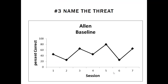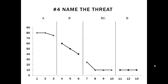Try graph three — name the threat. What's going on with Allen's baseline data here? We see a high amount of variability. This is data instability. What would we do to control for this threat? We'd want to keep collecting baseline data until we found the source of the instability and perhaps could get a stable trend.